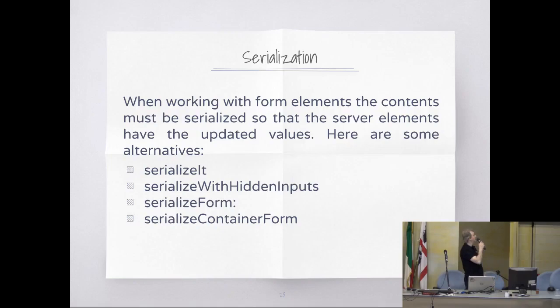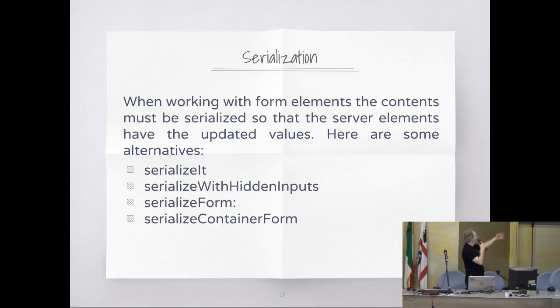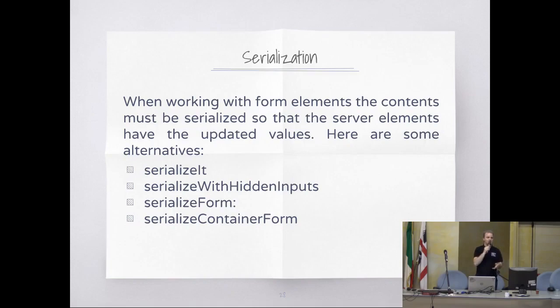When you have elements in a form and you want the values the user types to go to the server, you have to serialize it. The standard way is a submit button, but that does a full page render and we don't want that. So we do it with AJAX. You can say serialize just one input, or serialize the container form — this will find the form that contains the button and serialize everything.